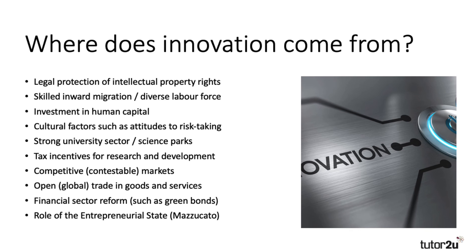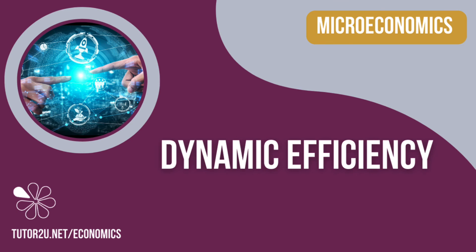Innovation might also come from investment in human capital to improve the skills, experiences, and aptitudes of the workforce, or from changes in cultural factors including attitudes to risk-taking. The key role of universities and science parks should be considered, along with competition and contestability within markets linked to more open global trade. Financial sector innovation — including things like green bonds — matters too. Economist Mariana Mazzucato has argued that the state can be entrepreneurial, particularly in the early-stage seed funding of public goods, as explored in her famous book on the entrepreneurial state. At its heart, dynamic efficiency is about product and process innovation.